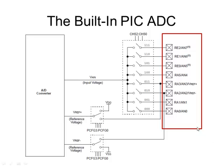Some of these pin names have two different names. For example, analog input seven also has the name RE2, which is bit two of port E. So we have a port that has dual purpose — it can either be a general purpose input-output port, or it can be used as an analog input. We have three bits of port E and five bits of port A — bits 0, 1, 2, 3, and 5 — that can be used as analog inputs.